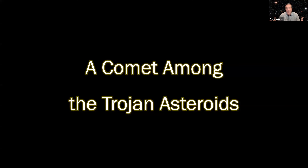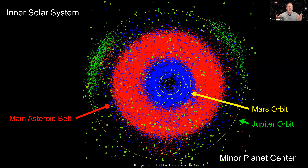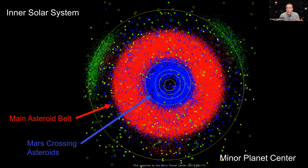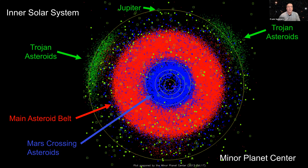Our first story tonight: a comet amongst the Trojan asteroids. This is a diagram of the inner solar system up to the orbit of Jupiter. The main feature in red is the main asteroid belt — 300,000 to 400,000 asteroids stretching from the orbit of Mars out to the orbit of Jupiter. Interior to Mars are the orbits of Venus, Earth, and Mercury. There are also blue objects called Mars-crossing asteroids, but they're quite small and not much of a threat.